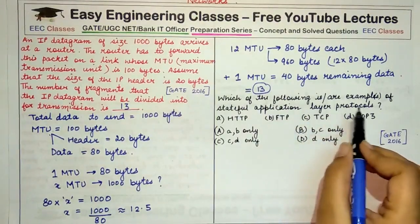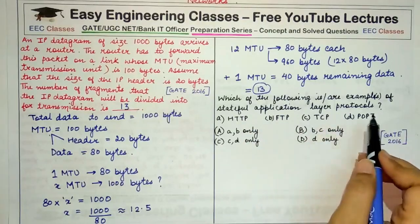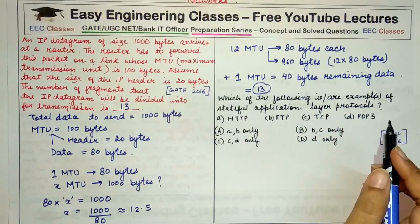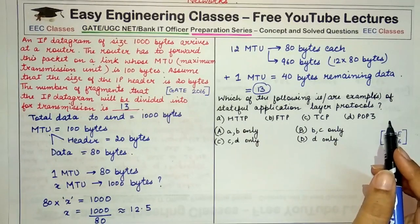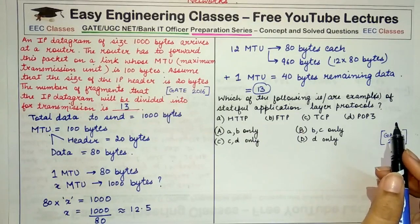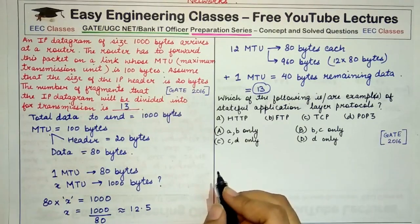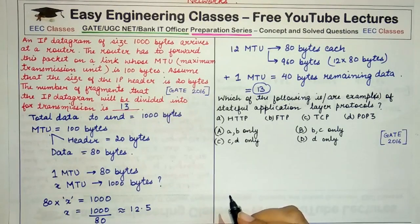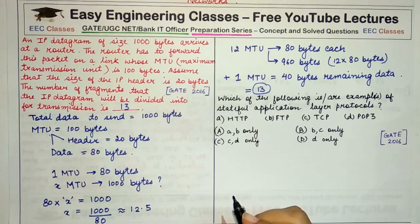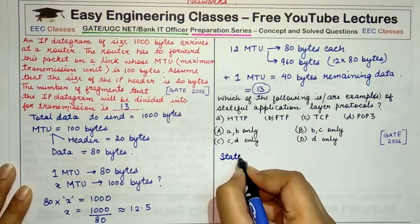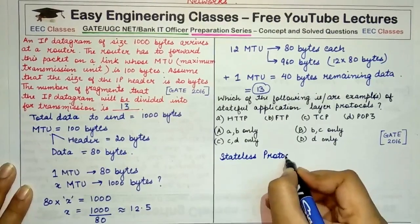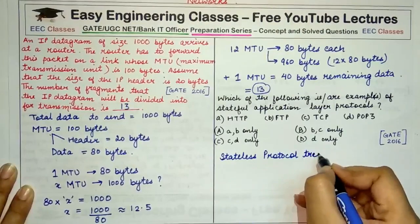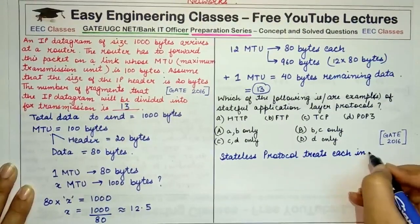The second question asks which of the following are examples of stateful application layer protocols. We need to understand stateful versus stateless protocols. A stateless protocol does not maintain the state of the connection — it treats each incoming request independently, unrelated to any previous request.